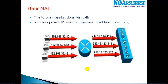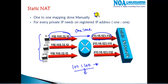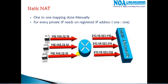In this video we'll see how to configure static NAT. As covered in the previous video, static NAT is a one-to-one mapping method where each private IP address is manually mapped to one registered public IP address. The major drawback is needing a one-to-one ratio — 100 users require 100 public IPs. It's most commonly used for hosting servers on the internet, such as a web server in the LAN.